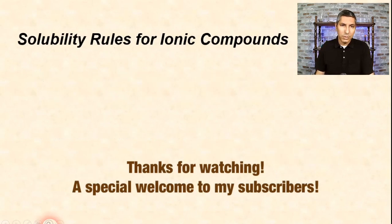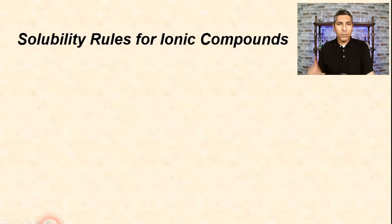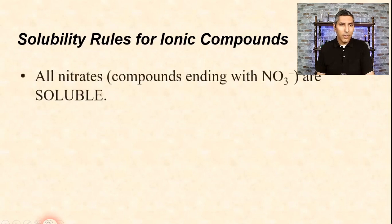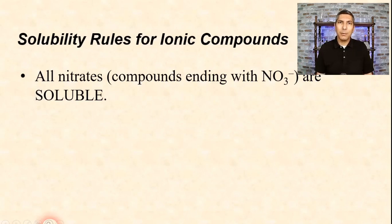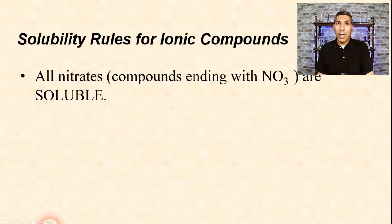We're going to look at some solubility rules for ionic compounds. The first rule is that all nitrates are soluble. So if you ever see a chemical compound that ends with NO3, that ionic compound is going to be soluble — it's going to dissolve in water. That covers a lot of compounds we actually use in high school chemistry.